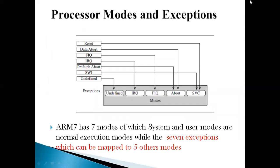ARM7 has seven modes: system mode, user mode, undefined mode, abort mode, supervisor mode, IRQ, and FIQ. When exceptions occur, each exception changes the mode of the processor from system or user mode to a particular specialized mode. That is the way an exception has to be handled — it is part of exception handling.